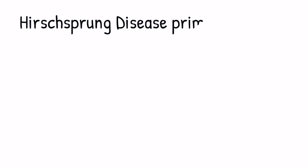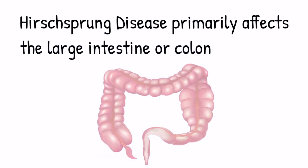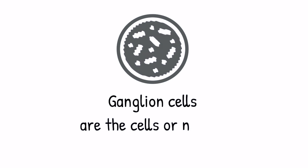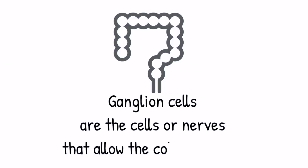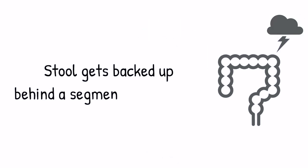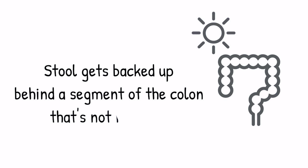Hirschsprung's disease is a condition that primarily affects the large intestine or colon. It's a condition that involves what we call ganglion cells, or the cells or nerves that allow the colon to relax, and so the stool is getting backed up behind the segment of colon that is not relaxing.